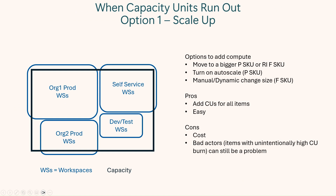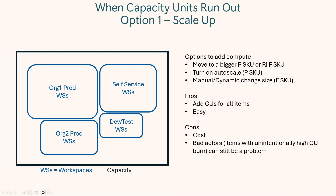The first option is to scale up. In these diagrams, the blue rounded rectangles are workspaces and the area represents the compute needed from the items in that workspace, while the black rectangles are the capacity. You can see the workloads on this capacity are taking more than what's available. So the first option is just to scale up — get a bigger capacity. That's easy to do, it does add cost, and it does minimize the potential risk for unintentionally high compute items, though it's reduced but still possible.